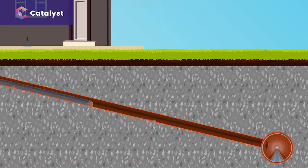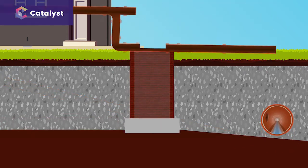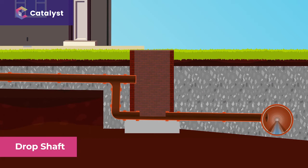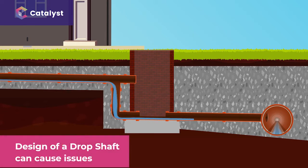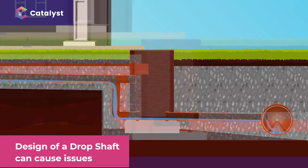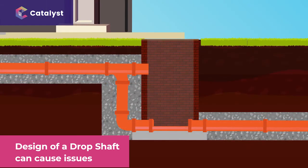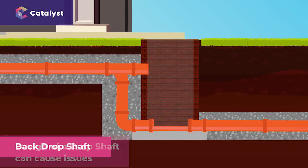If the sewer is deeper than the gradient allows, then a drop shaft or a series of drop shafts can be installed to get the pipework to the required depth. It's worth looking at the design of a drop shaft and the issues that can arise as a result. The drop shafts at this property are referred to as back drop shafts because they run into the back of the manhole.